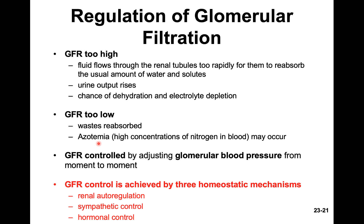If the GFR is too low, the filtration rate in the glomerulus is insufficient, so not enough waste filters into the tubule — it stays in your blood. We don't always have perfect blood pressure; sometimes it's high, sometimes low. Because we don't have conscious control over these rates, our bodies have three control mechanisms for regulating GFR.